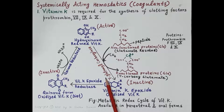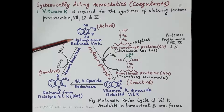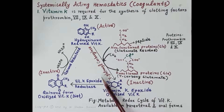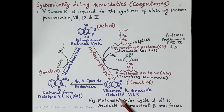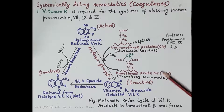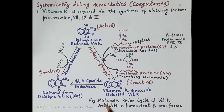This carboxylation reaction — the addition of one carboxylic group — is mediated by the enzyme gamma-glutamyl carboxylase. Vitamin K, in its reduced hydroquinone form, is used as a cofactor in this reaction, and gets converted to vitamin K epoxide (oxidized form) during the process. In the diet, vitamin K is available in the quinone (oxidized, inactive) form, which is reduced to the hydroquinone (active) form by quinone reductase, an NADPH-dependent enzyme.